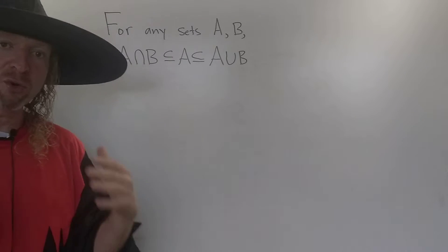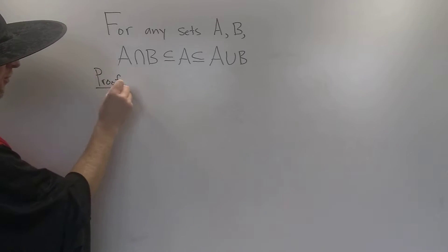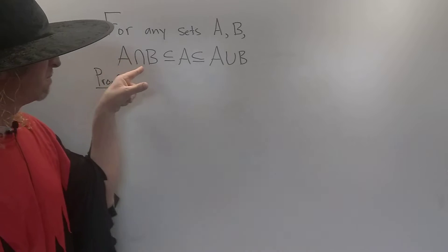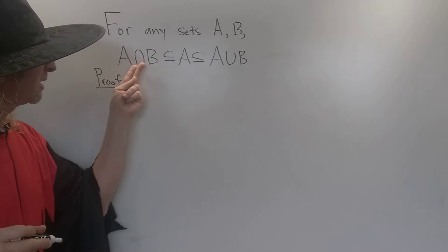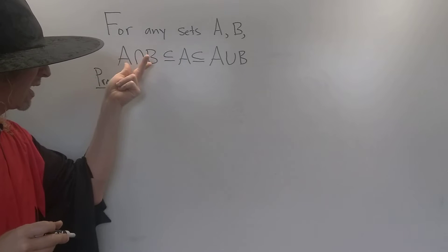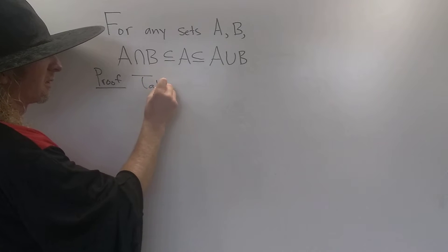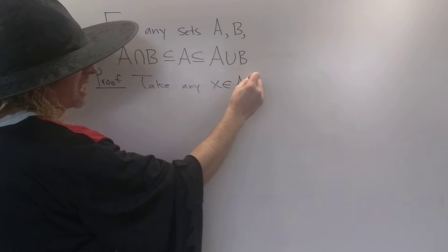Okay, let's go ahead and go to the proof. So we'll start the proof by showing the first inclusion. We'll show that A intersection B is contained in A. So to do that, we'll take an element in A intersection B, and we'll show it's also in A. So if we can show every element here is also here, we're done. So take any X in the intersection, any X in A intersection B.